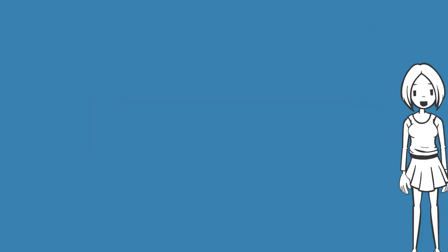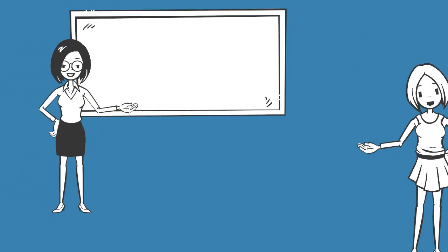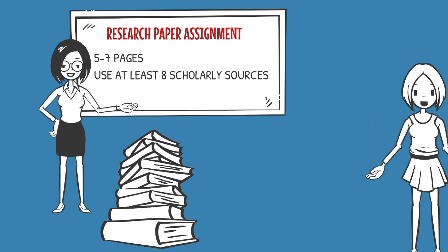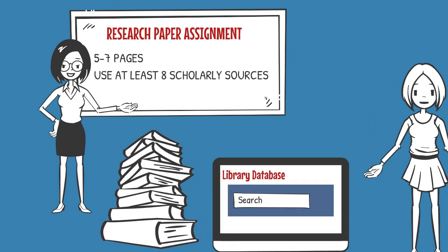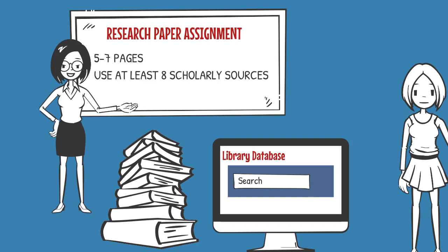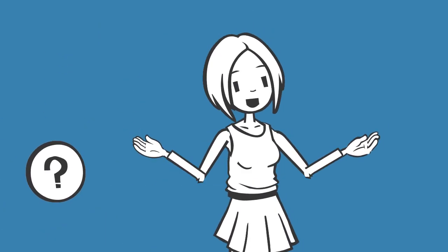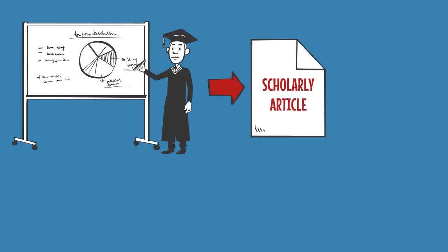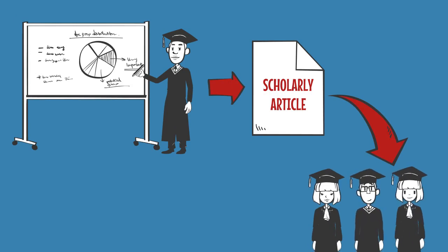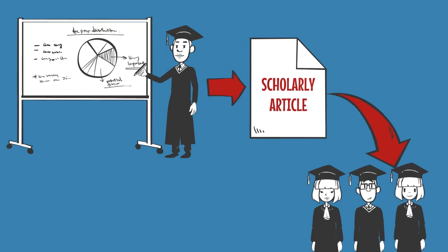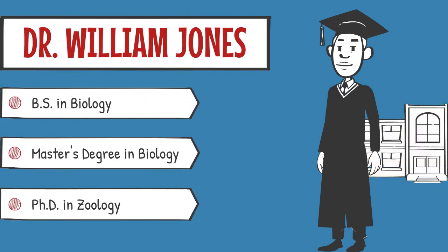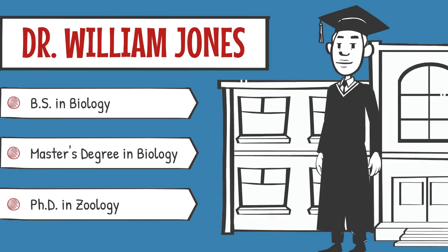Scholarly sources. Many of your professors will require you to use scholarly sources for your research papers. Scholarly sources have a lot of value and many of the library's databases prioritize scholarly sources. But what are they and why are they often considered authoritative sources of information? Scholarly sources are written by and for people with high levels of academic expertise. Usually, the authors have graduate degrees and are employed as professors or researchers in the areas they're writing about.